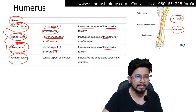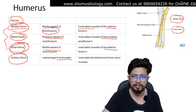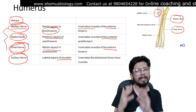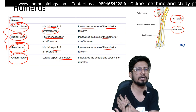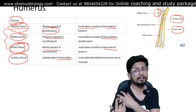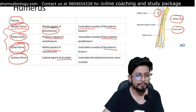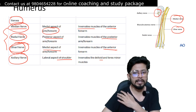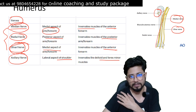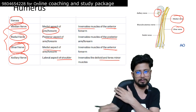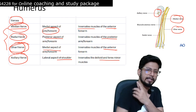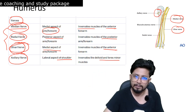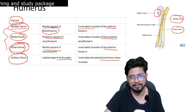The axillary nerve is on the lateral aspect of the shoulder, near the area where the humerus connects to the glenohumeral socket. It innervates the deltoid and teres minor muscles. Both the deltoid muscle at the front and the teres minor muscle at the back are regulated by the axillary nerve.